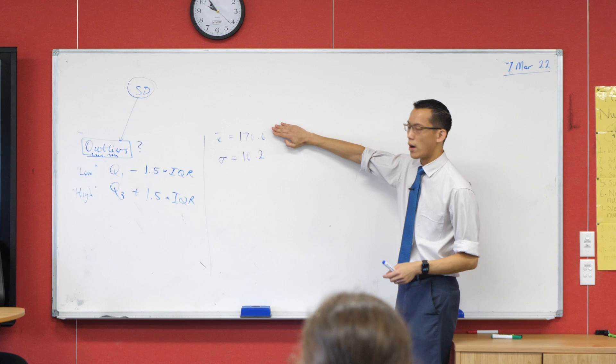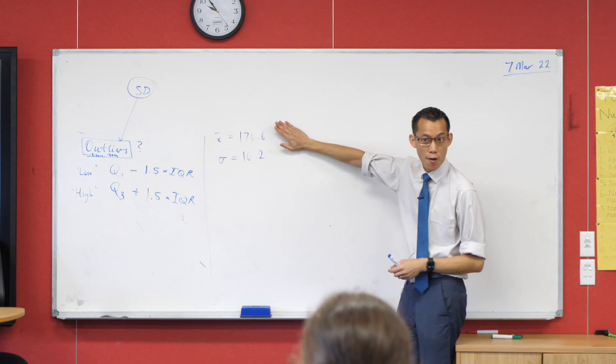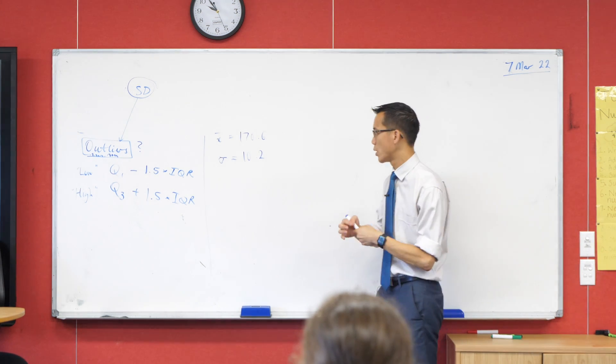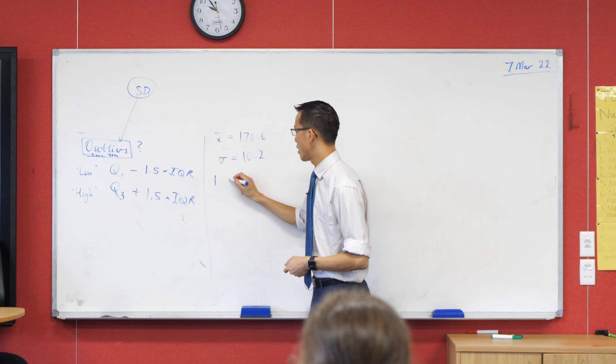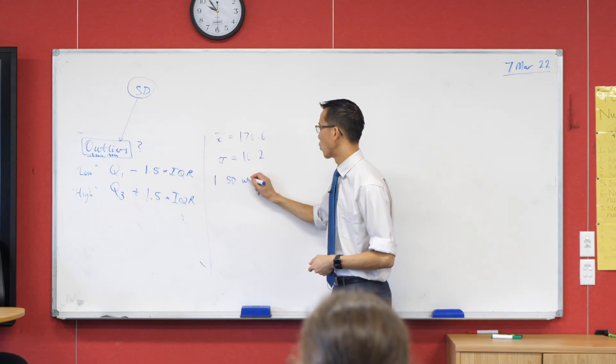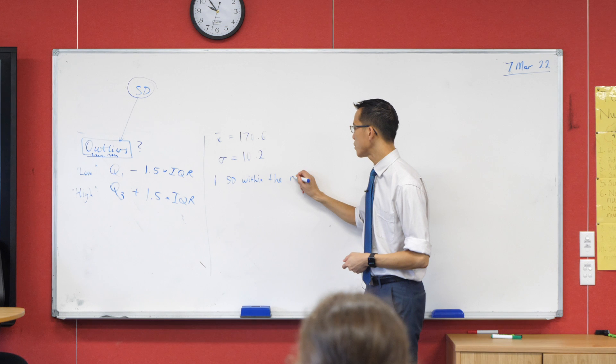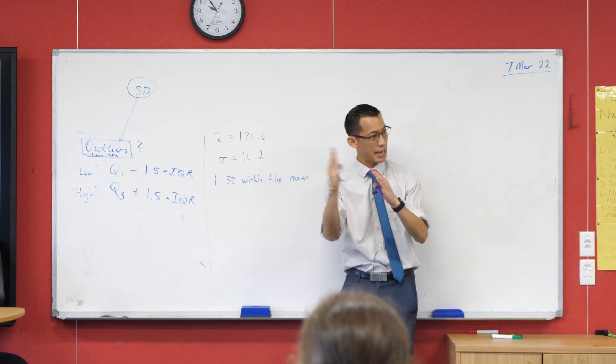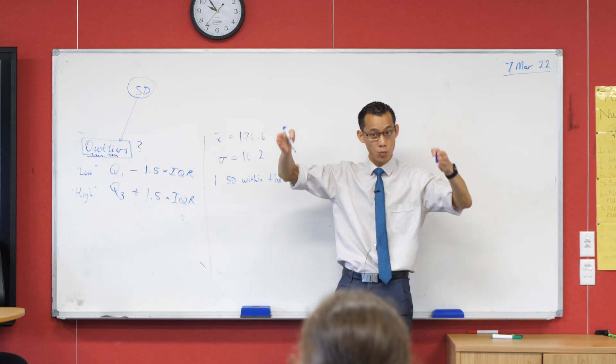We would say if you are one standard deviation away from the mean. So this is a range, right? So we would say, let's call this one standard deviation within the mean. So what I'm doing is I'm using that x-bar and I'm saying let's go down and let's go up and see what range we get.